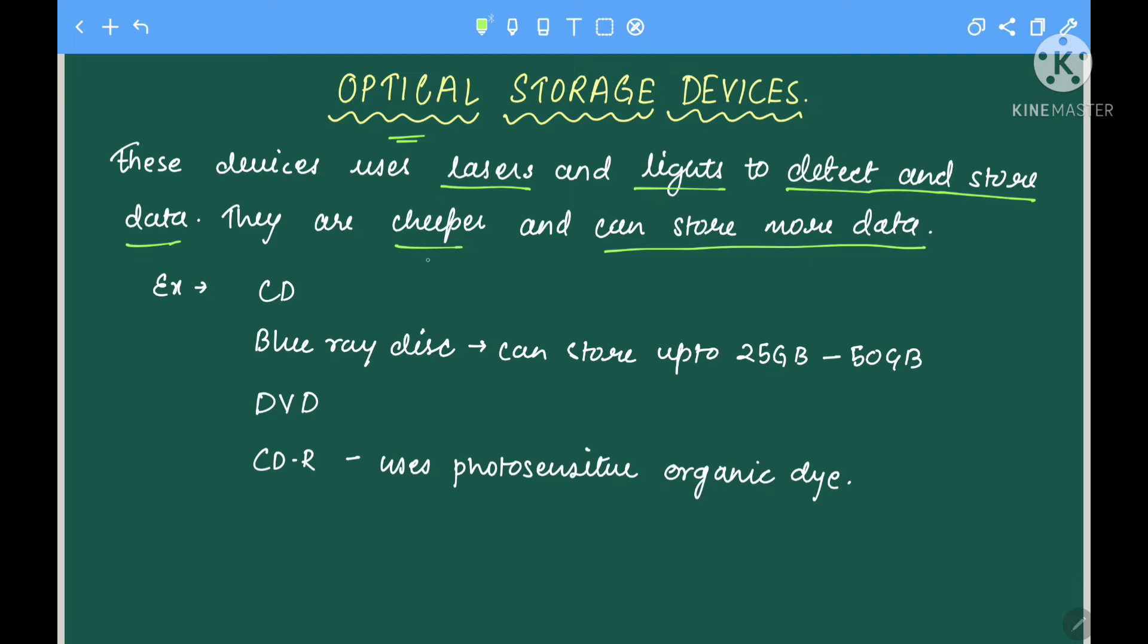For example, compact disc (CD), Blu-ray disc which can store data from 25GB to 50GB, DVD, and CD-R. CD-R uses photosensitive organic dye for storing data.